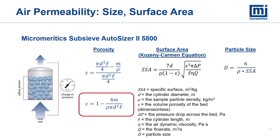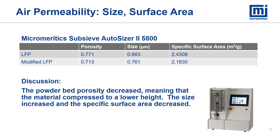The results of the air permeability analysis on the LFP and modified LFP show that the powder bed porosity decreased, meaning that the modified LFP is compressed to a lower height. The size results also show that the particle size increased and the specific surface area decreased.